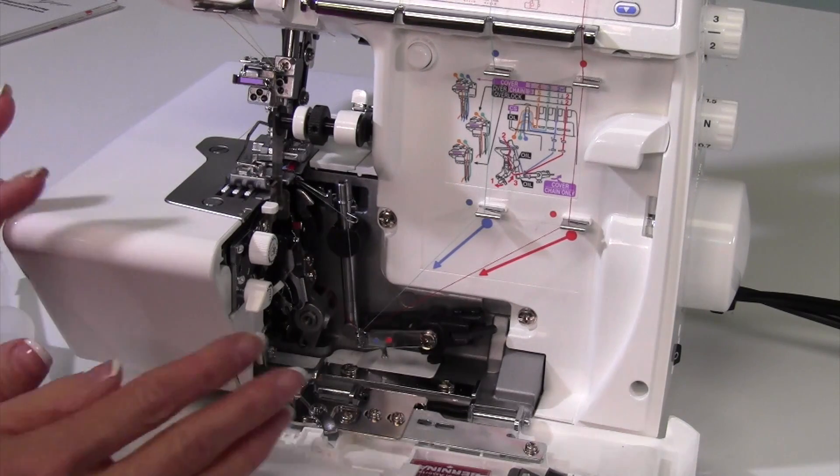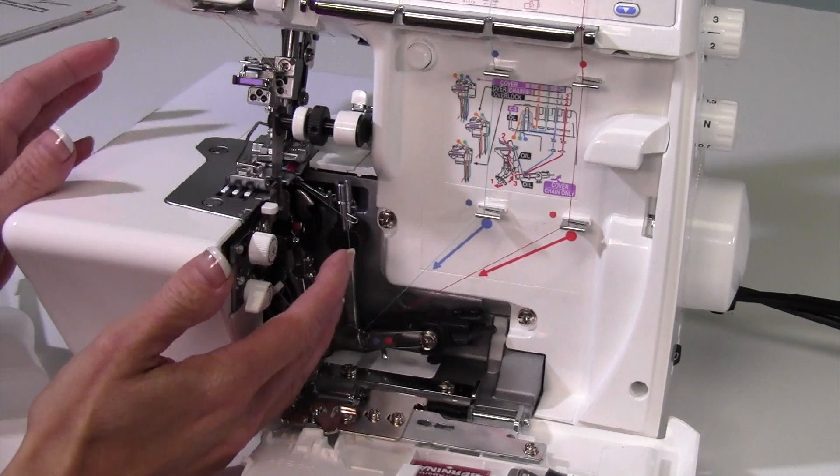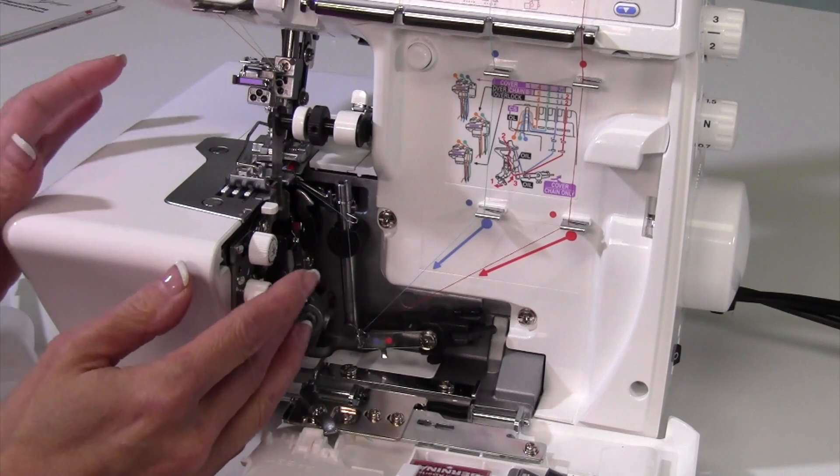Number one, please don't blow in the serger. That's just going to push lint back in. The same goes for canned air—that's really a no-no.